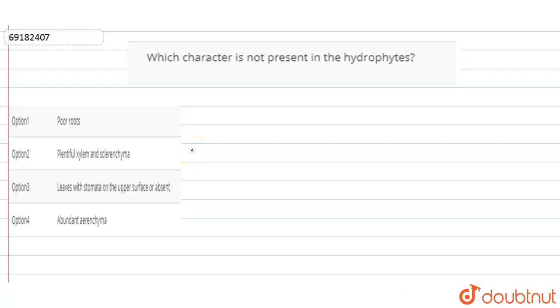Hello everyone, our today's question is which character is not present in the hydrophytes. We will tell you that hydrophytes are aquatic plants, which are habitual or adaptive to actually stay or to live in a wet or aquatic habitat.